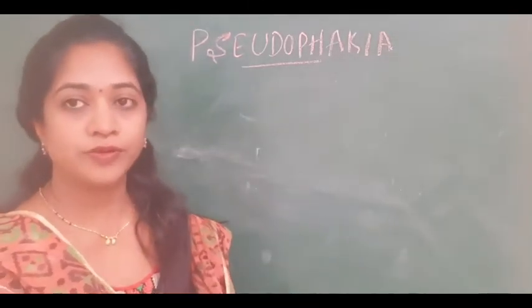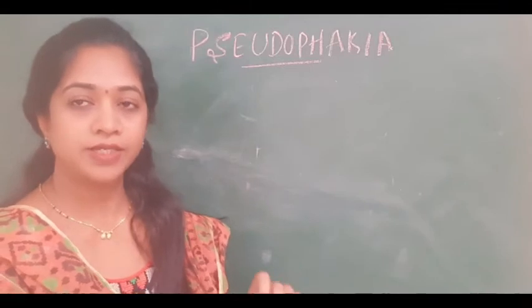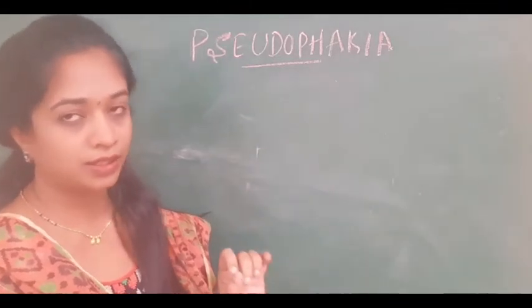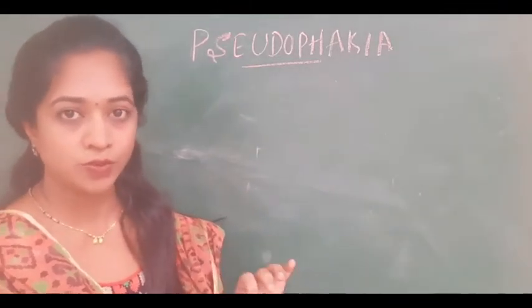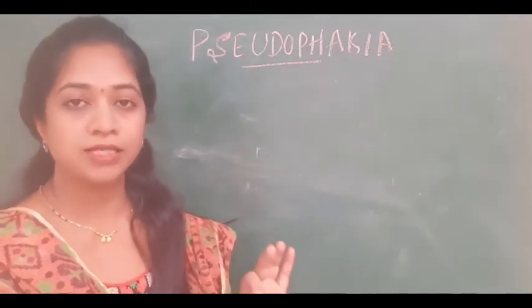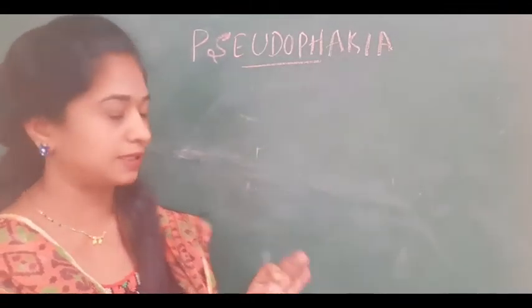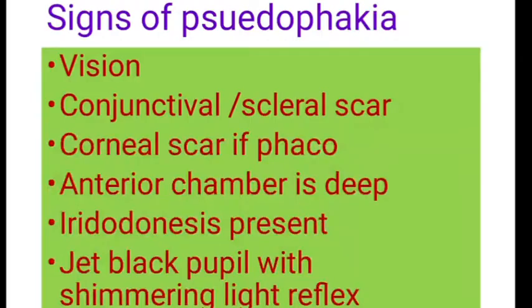So, what is Pseudophakia? It is the artificial intraocular lens which is used in place of the crystalline lens. Before going to the types of intraocular lenses and their complications, let us see the signs of Pseudophakia.